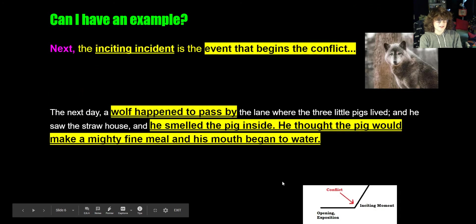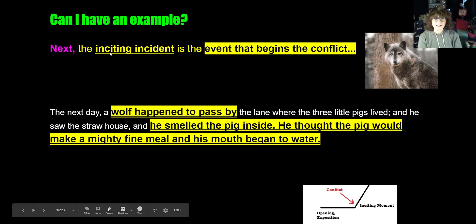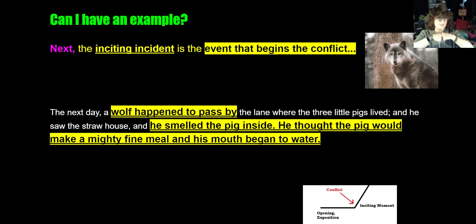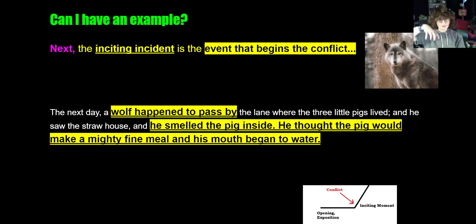Next, we go to the inciting incident. The inciting incident is the event that begins the conflict. For the Three Little Pigs, it's when the wolf shows up. 'The next day, a wolf happened to pass by. He smelled the pig inside the house and thought the pig would make a mighty fine meal.' So now we have a conflict created between these two characters — the wolf wants to eat the pig. We met the pigs first, so they are our main characters.